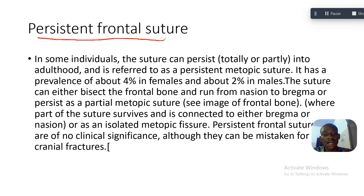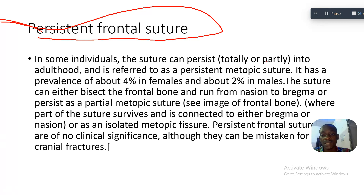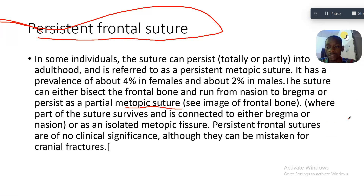What is the clinical relevance? If this frontal suture persists, in some individuals the suture can persist totally or partly into adulthood and is referred to as the persistent metopic suture. It has a prevalence of about 4% in females and about 2% in males. The suture can either bisect the frontal bone and run from the nasion to the bregma, or persist as a partial metopic suture, where part of the suture survives connected to either the bregma or nasion, or it can persist as an isolated metopic fissure.